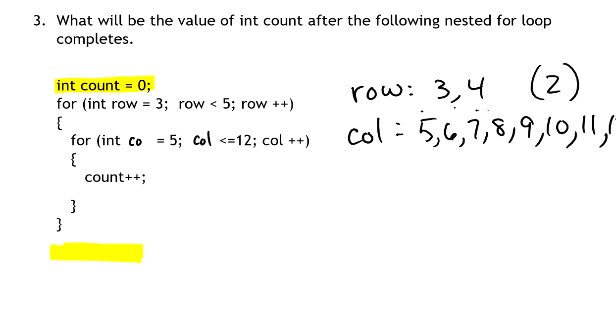right? So that's one, two, three, four, five, six, seven, eight - eight different times that that inner for loop will go through.